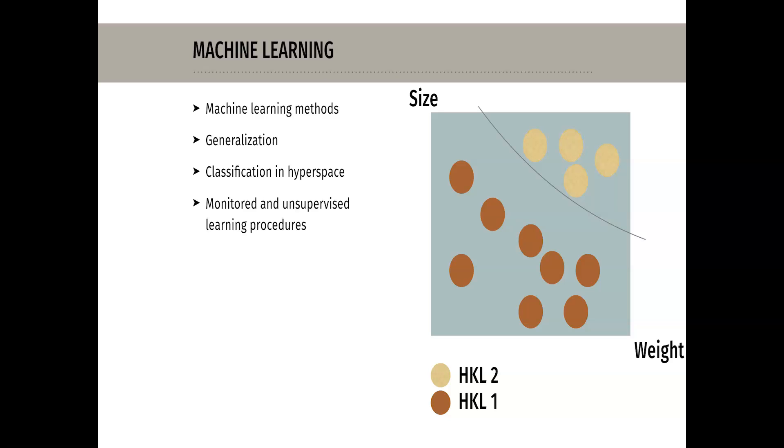In supervised teaching procedures, we know the correct answers, for example by the farmer's expertise in the classification of the potato crop. In unsupervised learning procedures, data is fed to the machine whose target values are not known in advance. The machine tries to detect patterns in the input data that deviate from structureless noise.